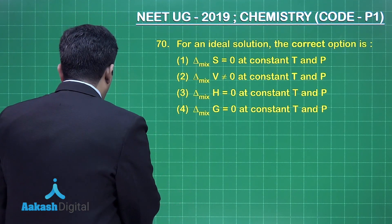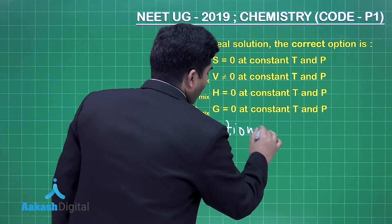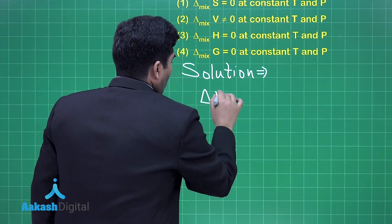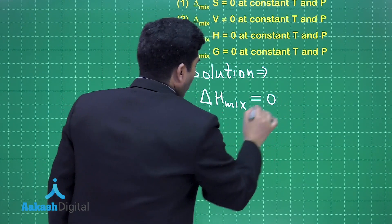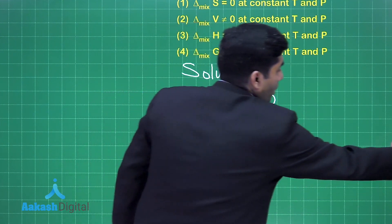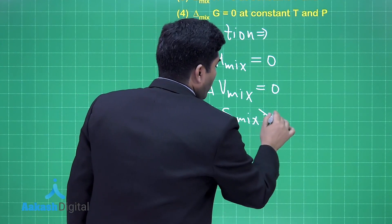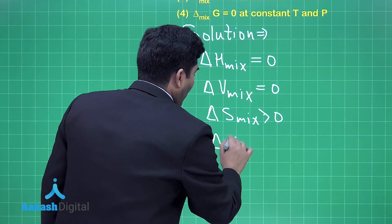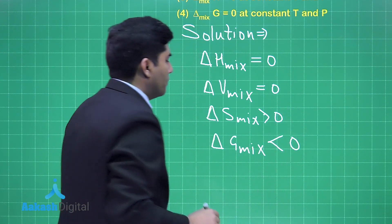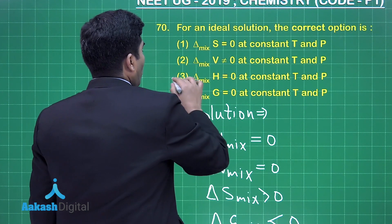We know that when ideal solution forms, let us write the solution. In the case of ideal solution, ΔHmix = 0, ΔVmix = 0, but ΔSmix > 0. Mixing is a phenomena which is quite feasible and spontaneous, that's why ΔG will be negative. So our correct answer will be option number three.